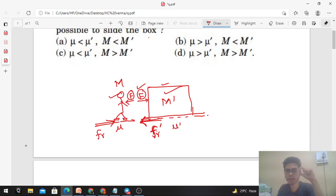So we need to find when the box does not slide but the man starts sliding. So what will be the condition for that? F should be less than F_r'. Why?